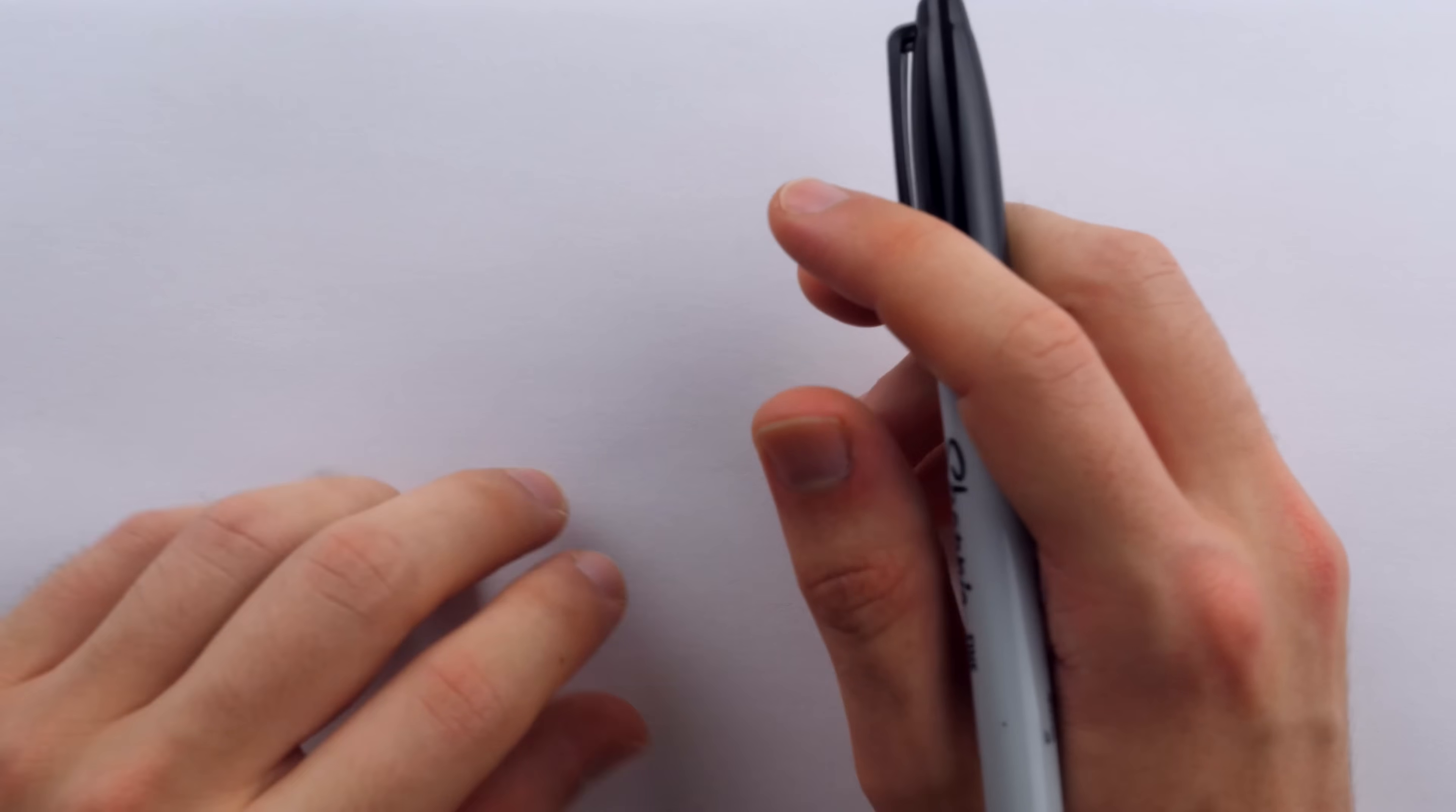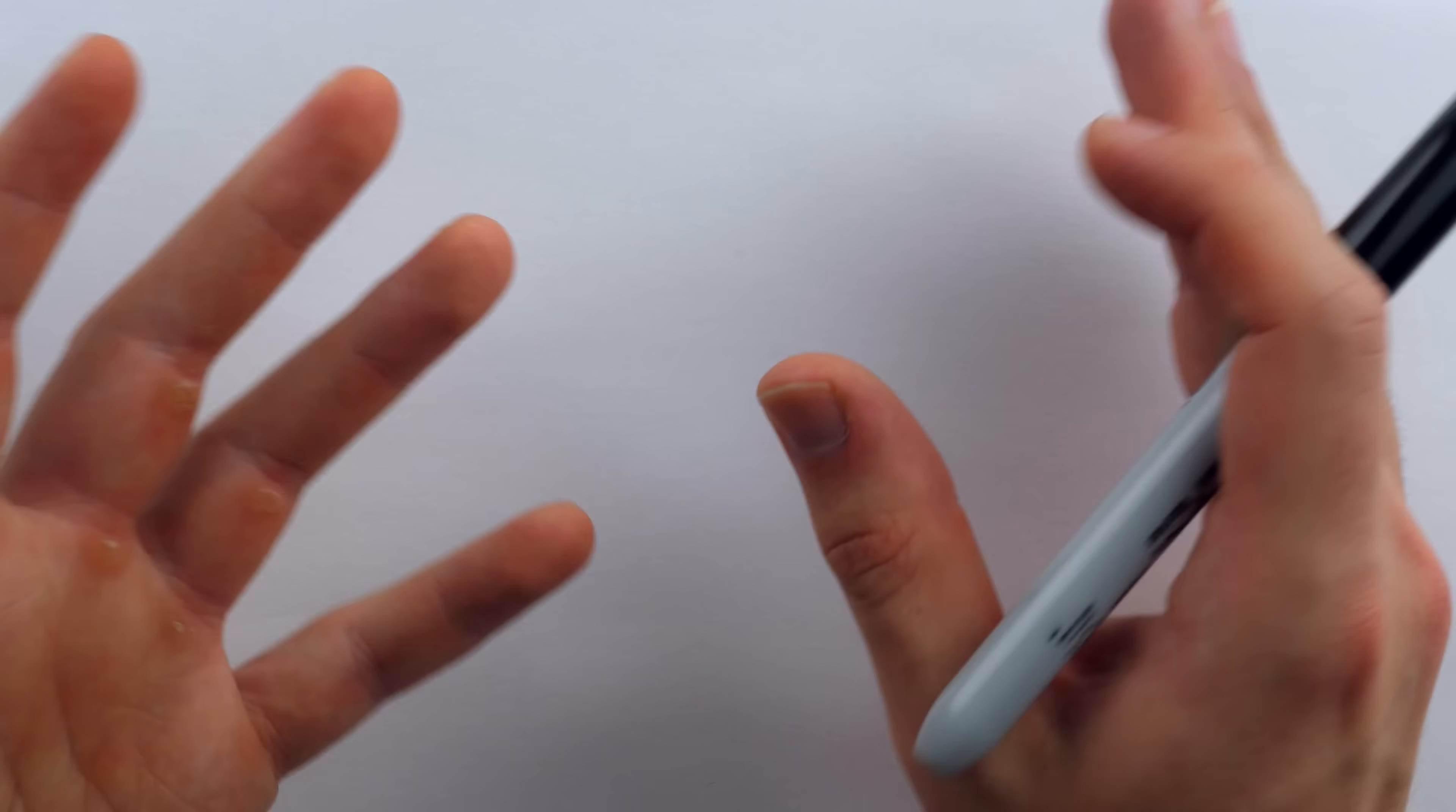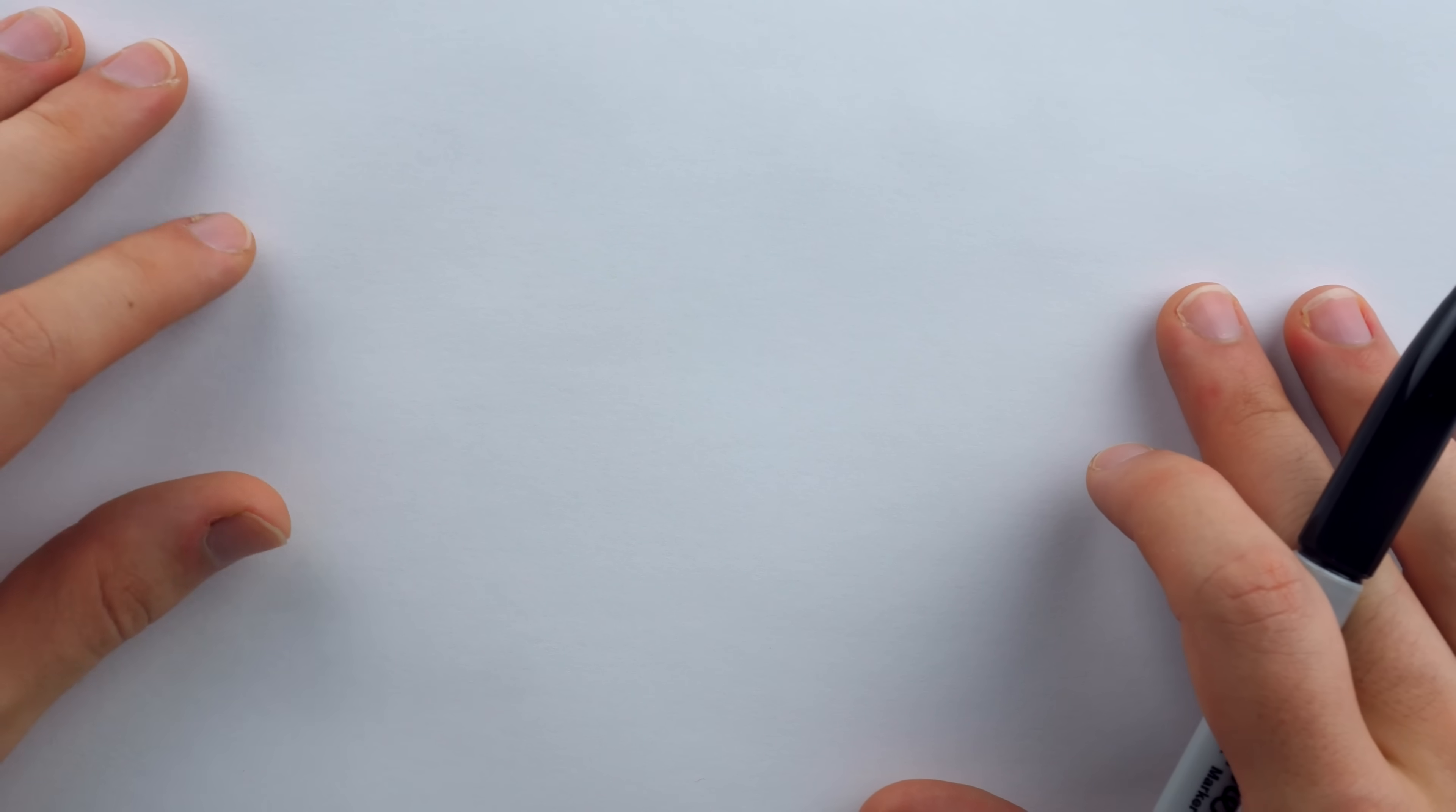Alright, now defining new notations is fun and all. It's a little silly. You get a little wacky. Everybody loves it. But it's a little less interesting without seeing an example of where it would actually show up in some sort of mathematical problem. So for a great example of that, let's look at graph theory.